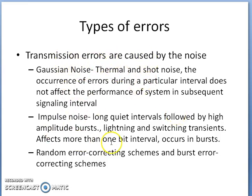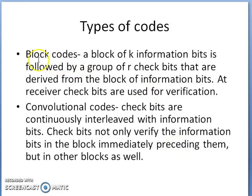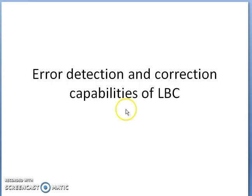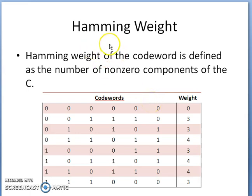Types of errors include Gaussian noise and impulse noise. Gaussian noise is caused by thermal and shot noise, whereas impulse noise is caused by lightning and switching transients, which affects more than one bit interval. We will discuss block codes now and convolutional codes after a few lectures. For linear block codes, we will discuss their error detection and correction capabilities, including Hamming weight and Hamming distance.